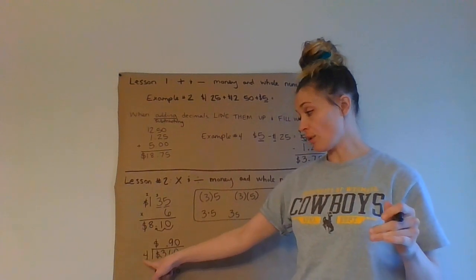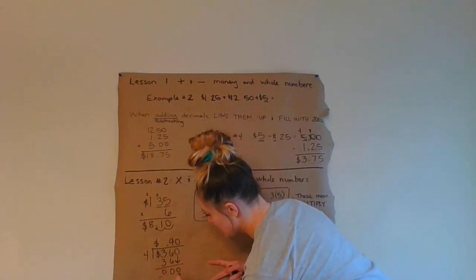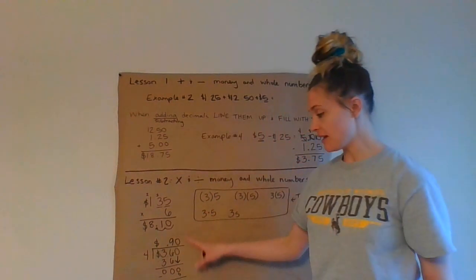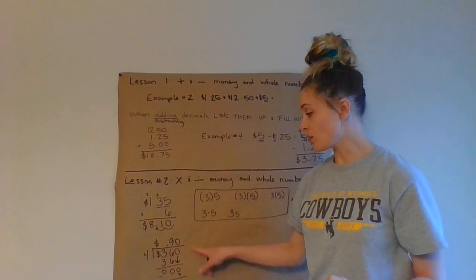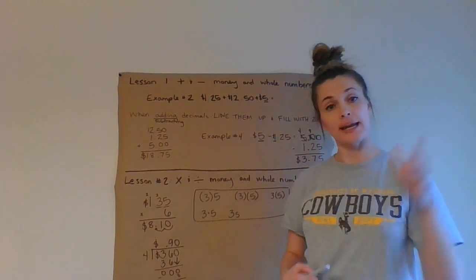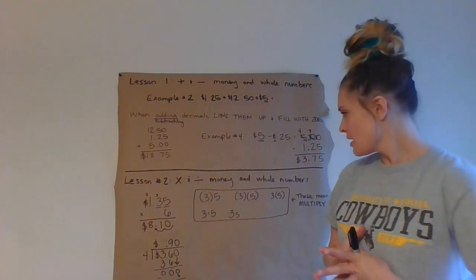Zero goes into four, or zero times four is zero. Zero minus zero is zero. I have nothing left to bring down. I have no remainders. So how much is each person going to get if I'm splitting it up? We're each going to get ninety cents.